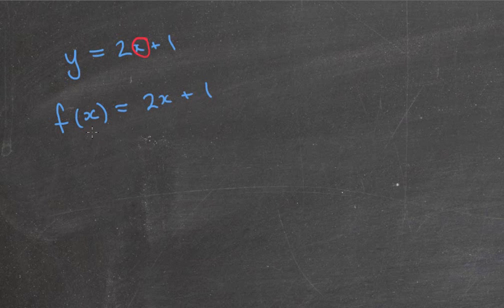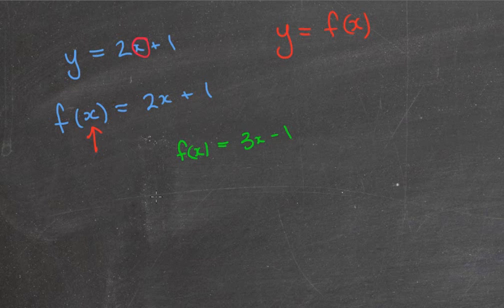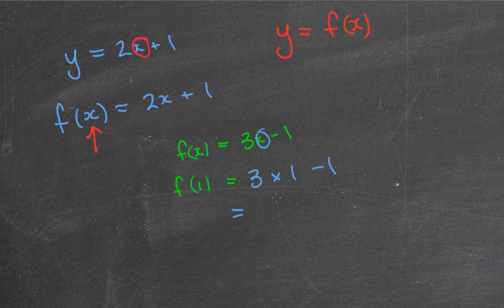So it tells me automatically that I'm substituting values for x into this particular function. We often refer to this as f of x is equal to 2x plus 1. Basically, f of x has the same value as y. y is equal to f of x and you might see that around as well. They basically interchange, they mean the same thing. So for example, you might be given this particular question. They might give you f of x is equal to 3x minus 1 and they might say find the value of f of 1. That means that basically wherever you see that x value, you're going to put 1. So I'm going to have 3 times 1 minus 1, which equals 2. So f of 1 is equal to 2.